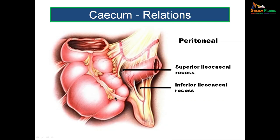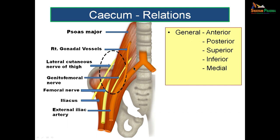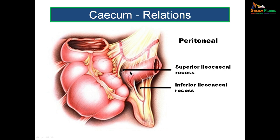The cecum is covered by peritoneum on all sides and has two folds connecting it to the ileum. The upper vascular fold forms the anterior boundary of the superior ileocecal recess behind it. The lower non-vascular fold of Treves forms the anterior boundary of the inferior ileocecal recess. These two recesses are at the junction of the cecum and ileum. Occasionally the cecum has a mesocolon suspending it, making it a mobile cecum.